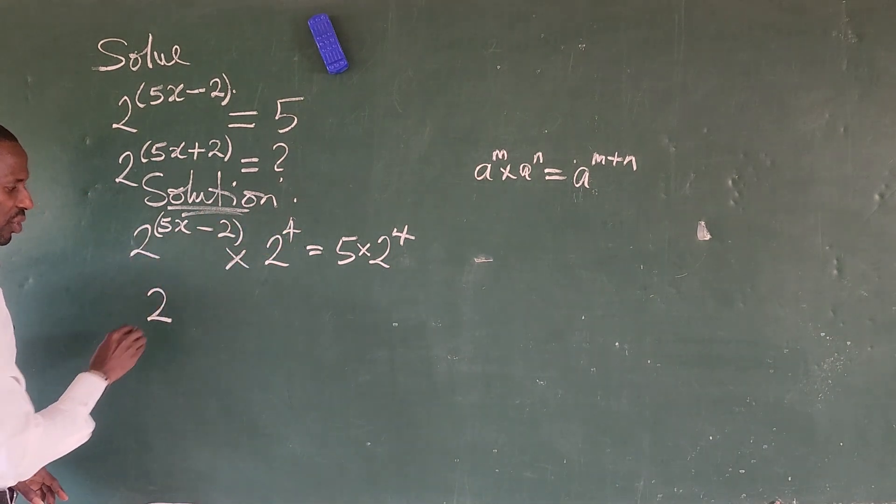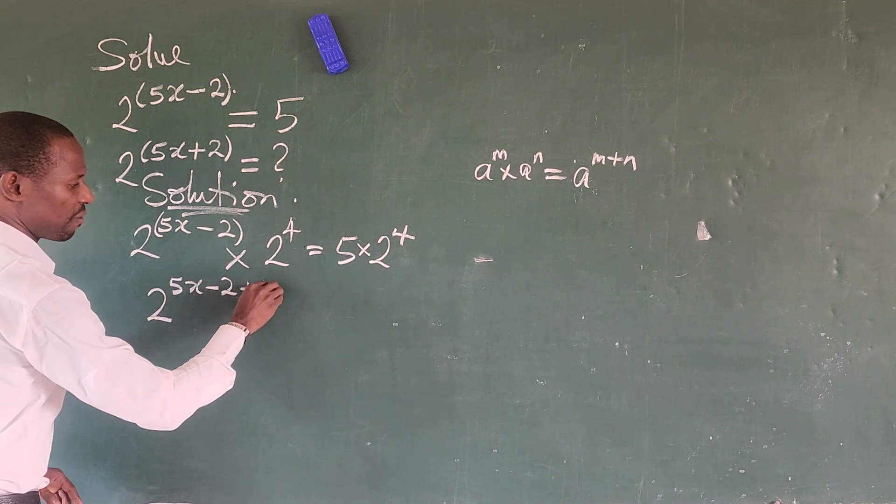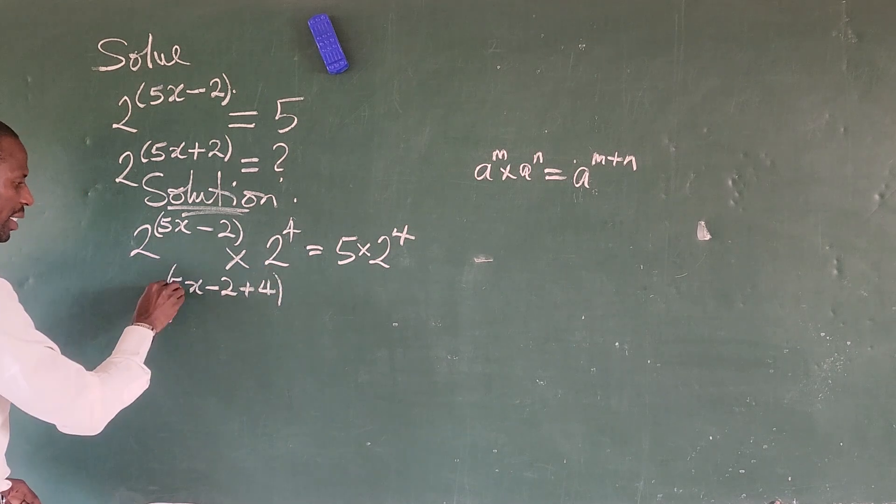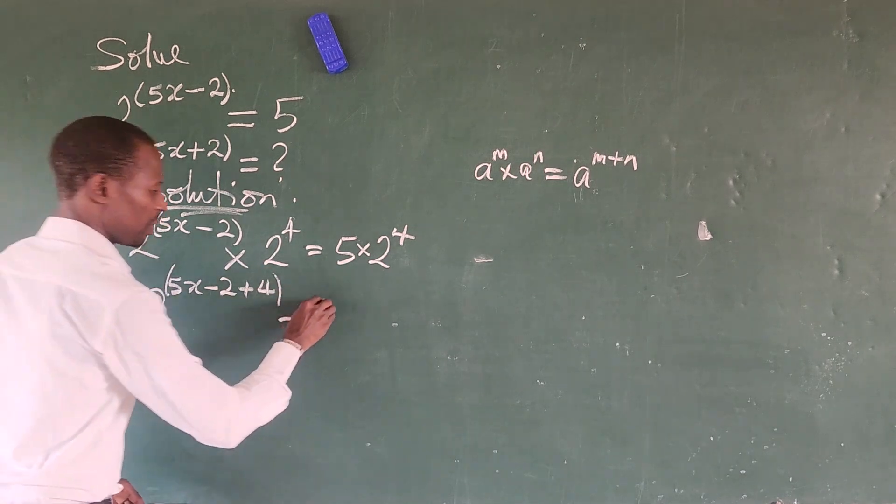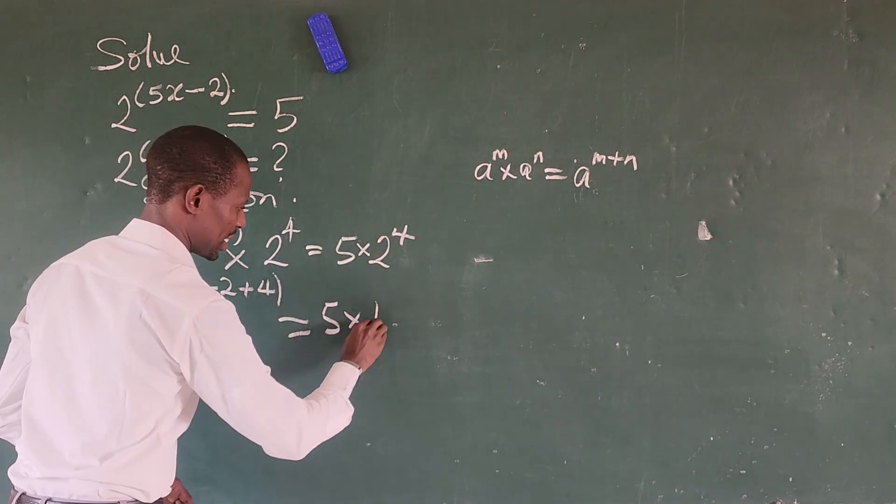So this will now give us 2 to the power of 5x minus 2 plus 4, or in bracket. This is equal to 5 times 2 to the power of 4, which gives us 16.